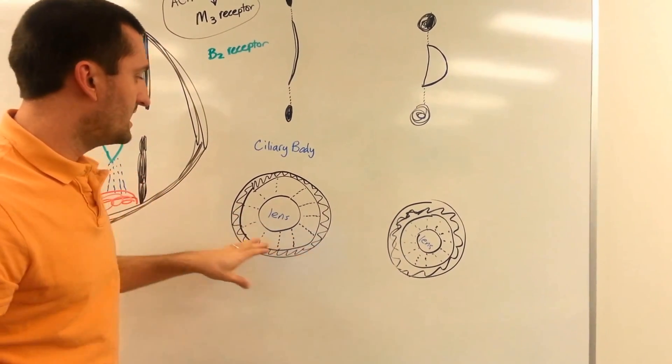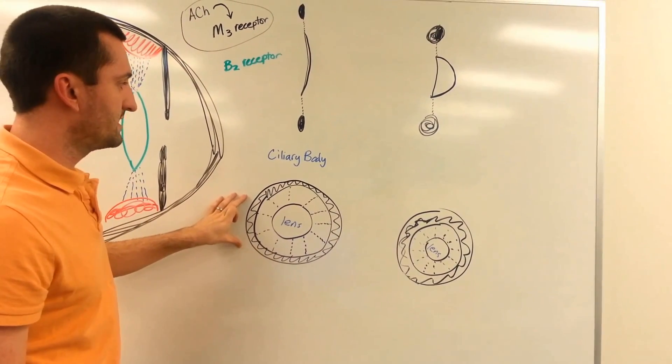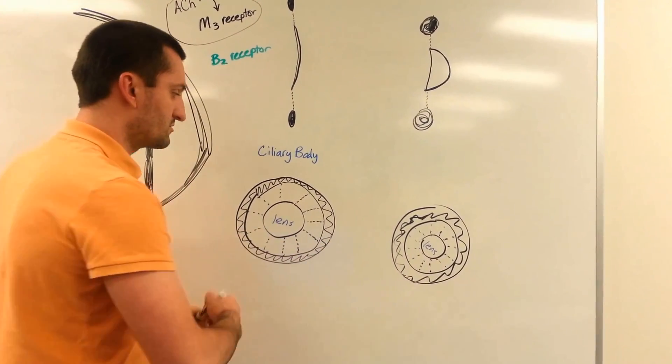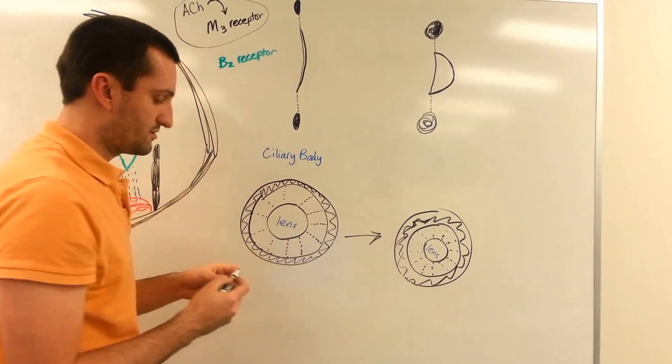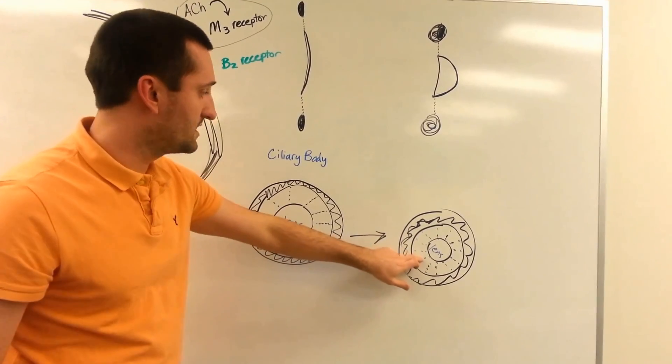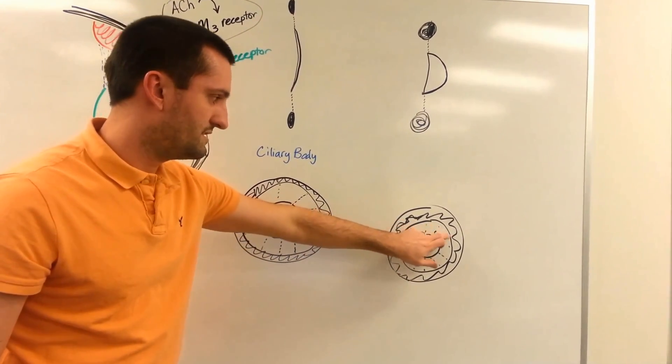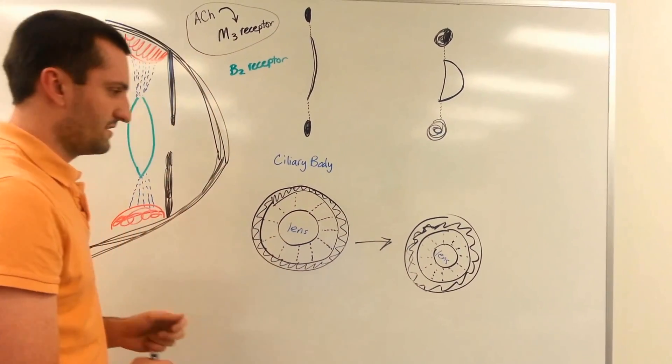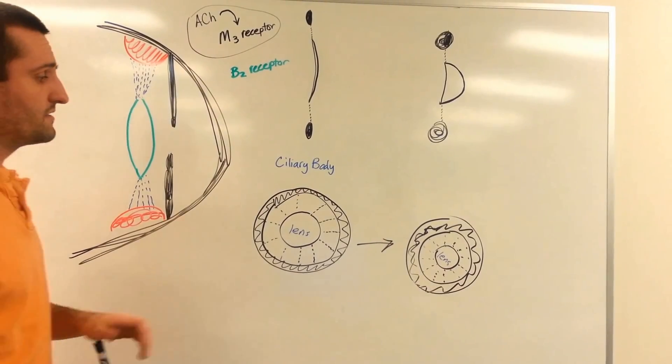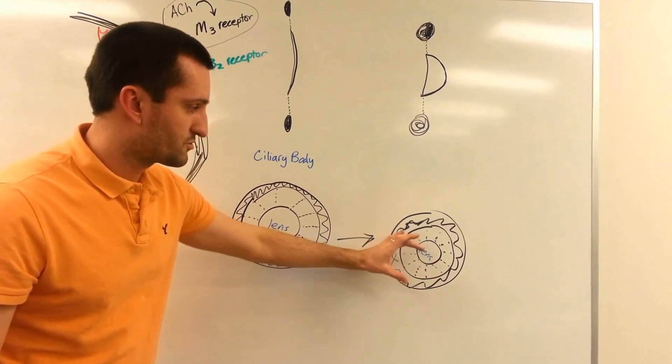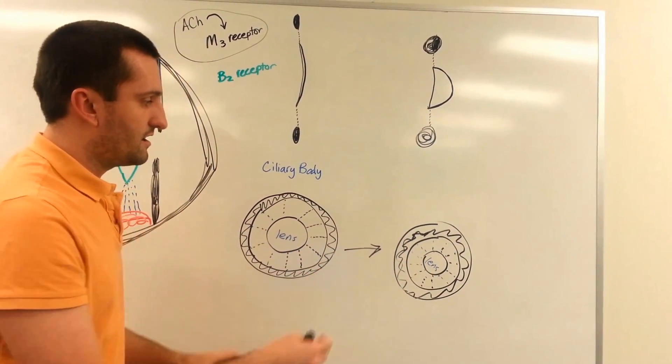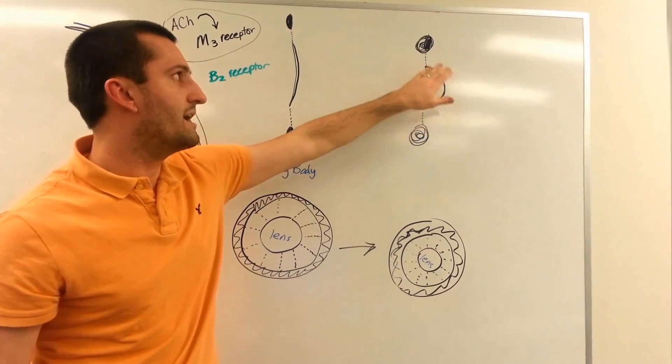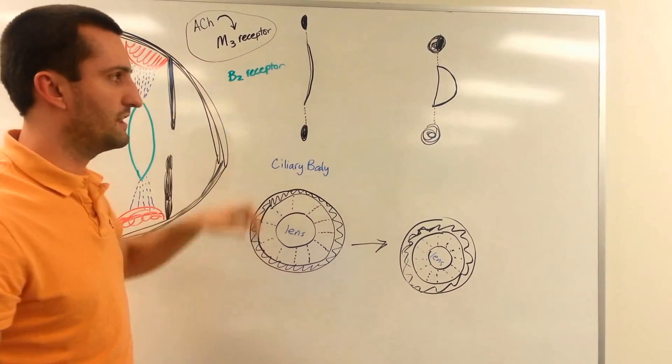And again, we see here, we have the larger relaxed ciliary body, and it goes into a contracted state. When it's a contracted state, it's going to take a little less pressure off of these suspensory ligaments that are attached to the lens. And the lens will, in fact, shrink if we're looking at it straight on, because it's rounding out instead of being pulled flat like a pancake.